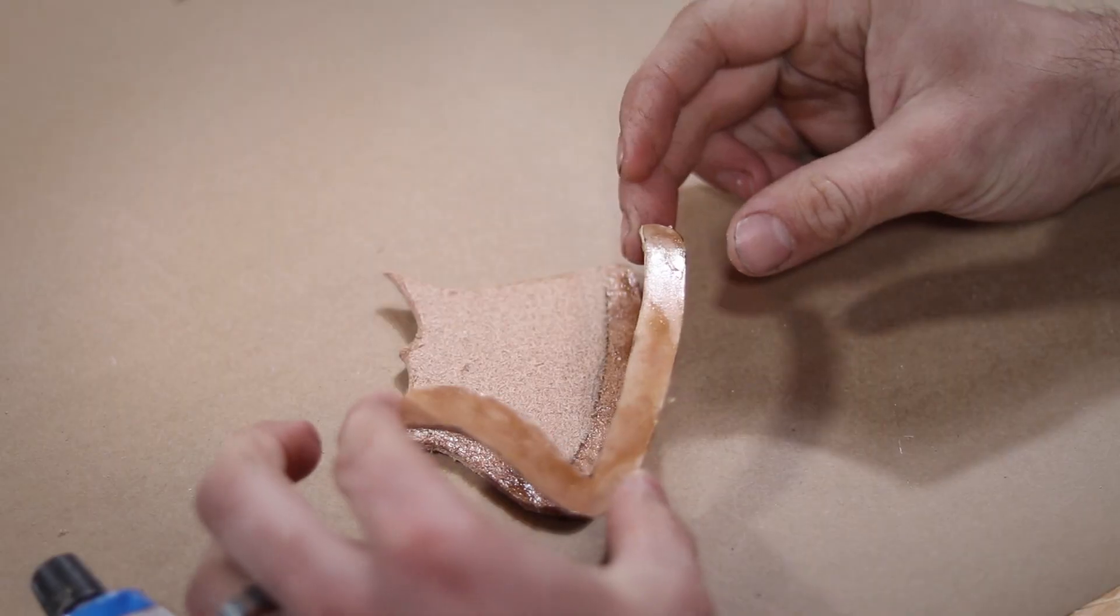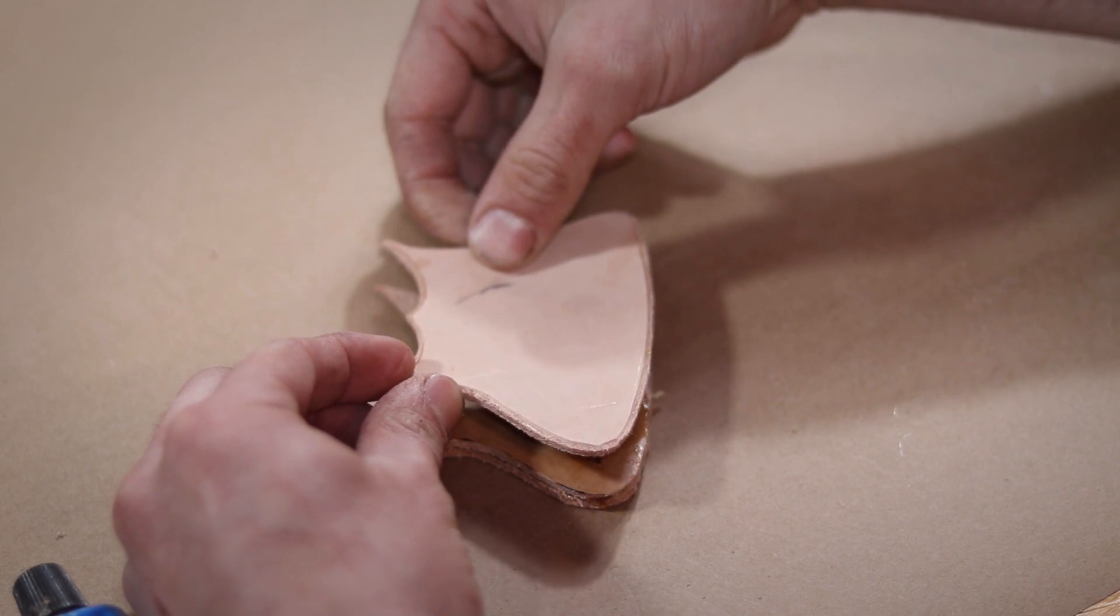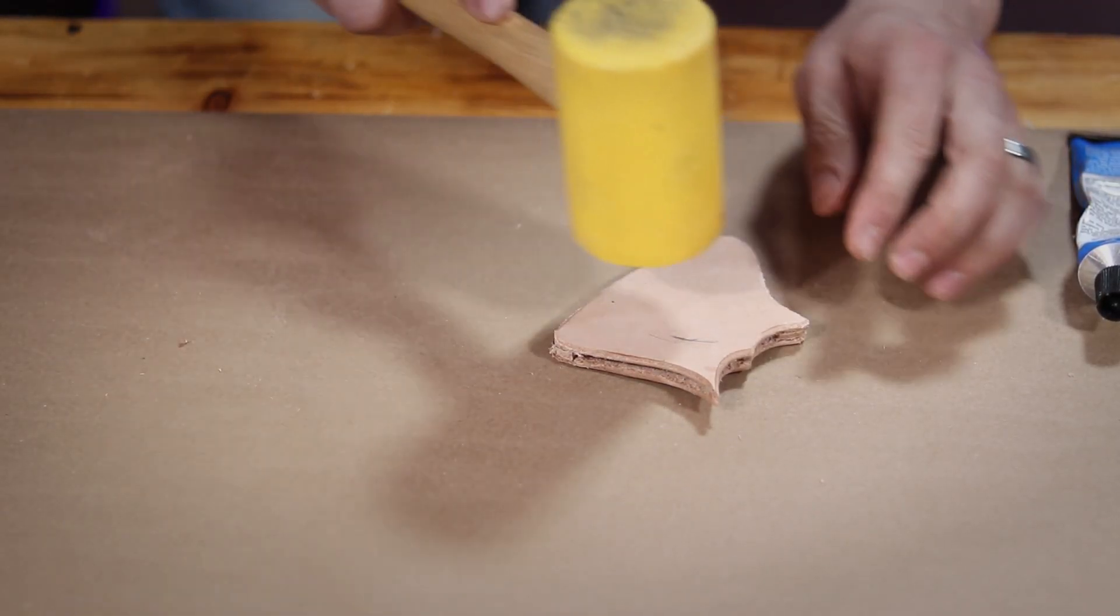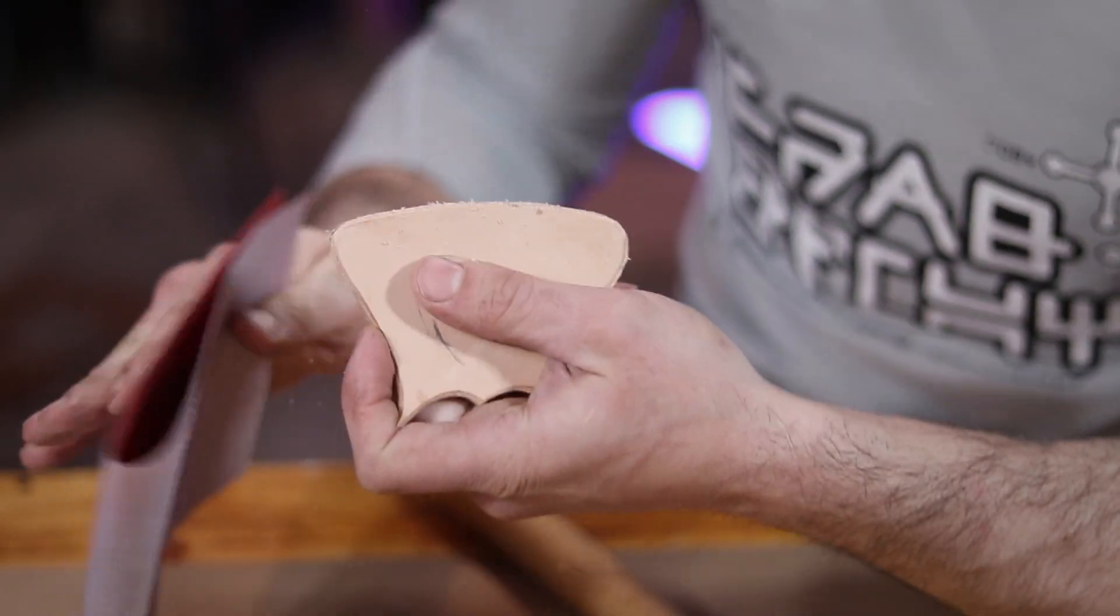After letting the barge cement sit for about 15 minutes, I was able to stick everything together. Be careful with this process because once that cement touches each other, it is stuck there for good. I then took a bit of sandpaper to the edges just to make sure everything met as flush as possible.